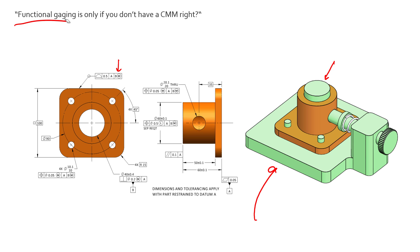The question was 'Functional gauging is only if you don't have a CMM, right?' And that's not necessarily true. There are pros and cons to both CMMs and functional gauges, and oftentimes you can even intermix them. Some parts, if they're complex parts, might be able to utilize a functional gauge to check, for instance, a pattern of holes, and then use a CMM to check a profile of a surface of the outside surfaces.